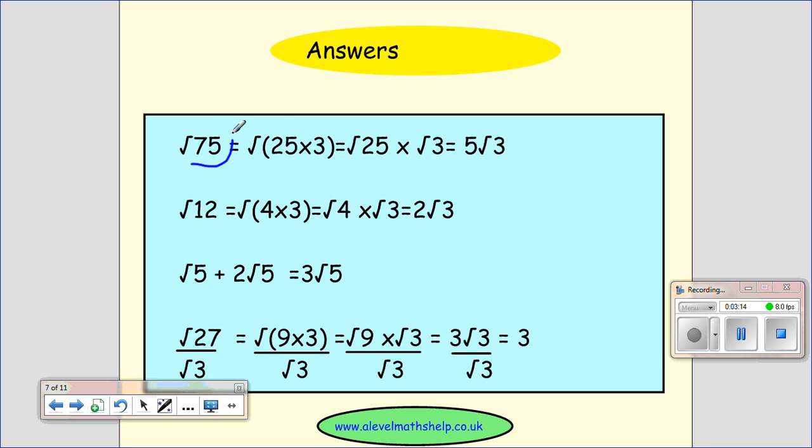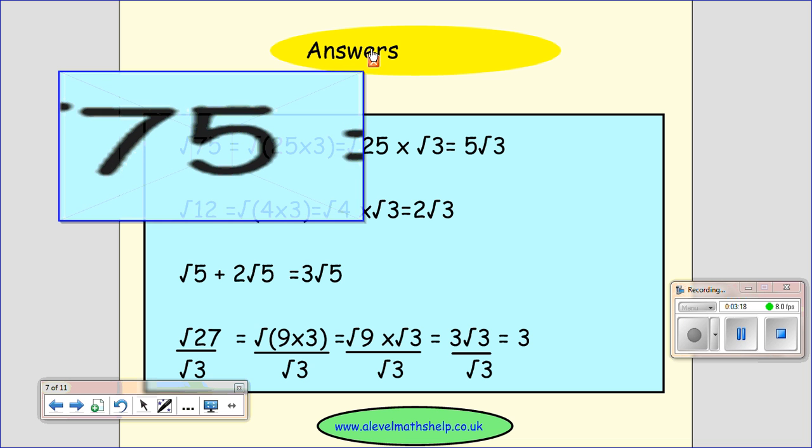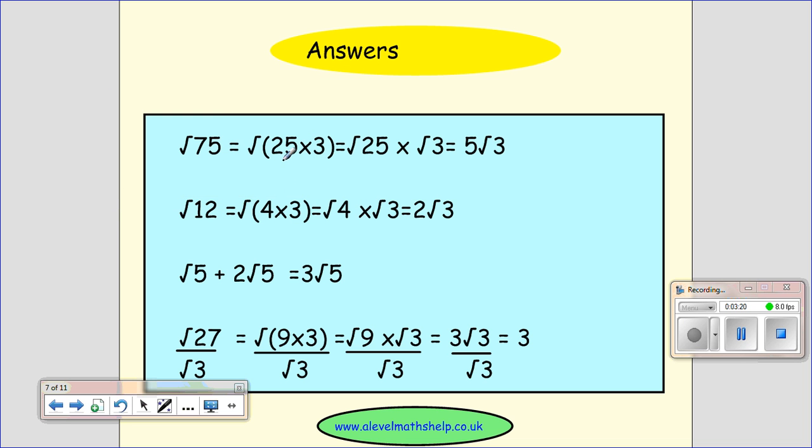So first of all, root 75. In 75, I can see that there's a 25 hidden. So 25 is my square number. 25 times 3 gives me the 75. I then split it into the square root of 25 times the square root of 3. And the square root of 25 gives me 5, so I get 5 root 3.